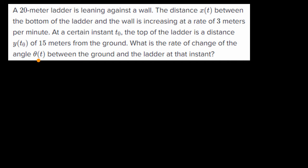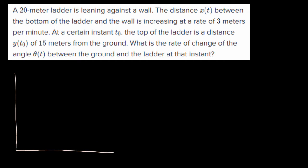What I'm going to do is draw this out, and the first step is to think about what equation will be helpful to solve this problem. So a 20 meter ladder is leaning against a wall — let me draw a wall here. Now let me draw our 20 meter ladder, so it looks something like that — that is 20 meters. The distance x(t) between the bottom of the ladder and the wall is this distance right over here, x(t).